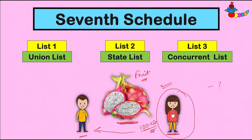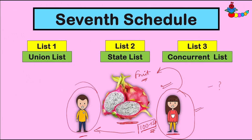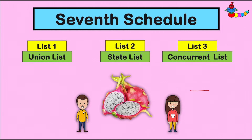मम्मी का ये मानना था कि dragon fruit घर में आना चाहिए कि नहीं, ये मेरी decision making होनी चाहिए, क्योंकि List 2 में लिखा हुआ है कि fruits कौन से आएंगे घर में — वो मैं decide करूंगी। लेकिन पापा का ये मानना था कि dragon fruit क्योंकि 100-500 रुपए तक का आता है, तो ये budget और finance से related चीज़ थी, जो उनके arena का part है।